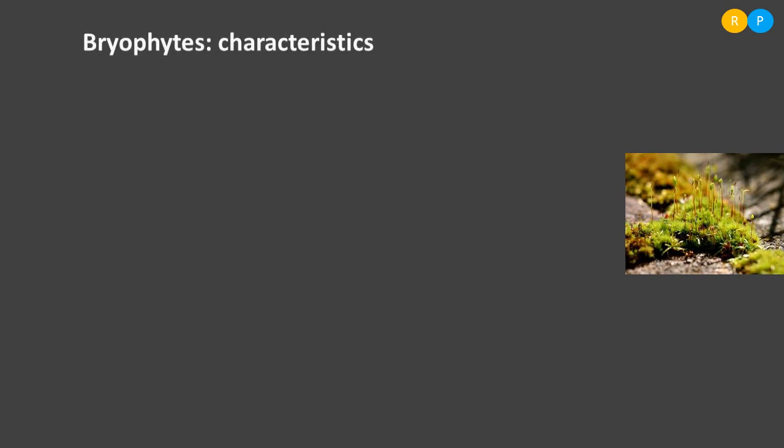Now we are going to study the second division of plant kingdom, that is bryophytes. Bryophyte is the second division where we can see some kinds of plants. These plants are comparatively a little more complex than algae. Let us understand the habitat of these plants, how they multiply, and what their actual structure is.